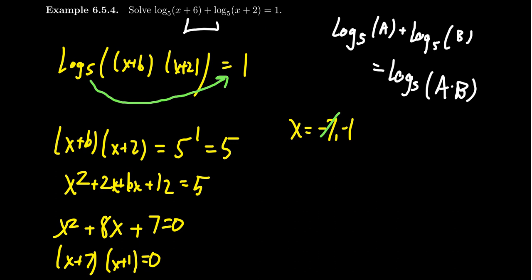Just because negative 7 didn't work doesn't mean negative 1 won't work. These logarithmic equations could have two solutions, one solution, or no solutions. We have to check both. We take negative 1, you're going to get negative 1 plus 6, which is 5. Then negative 1 plus 2, which is 1. If you take log base 5 of 5, you get 1. If you take log base 5 of 1, you get 0. 1 plus 0 equals 1. So the only legitimate solution is x equals negative 1. It's important when working with logarithmic equations that you always check your solutions, because you might have numbers that don't belong because they fall outside the domain.